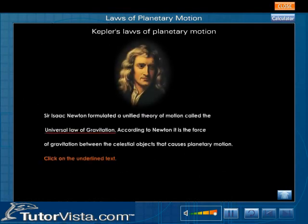However, it was Sir Isaac Newton who formulated a unified theory of motion called the Universal Law of Gravitation. According to Newton, it is the force of gravitation between the celestial objects that causes planetary motion.